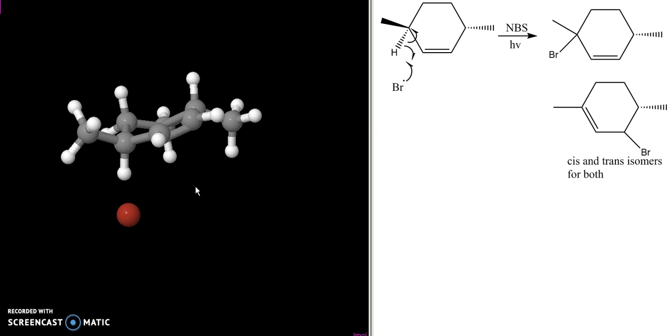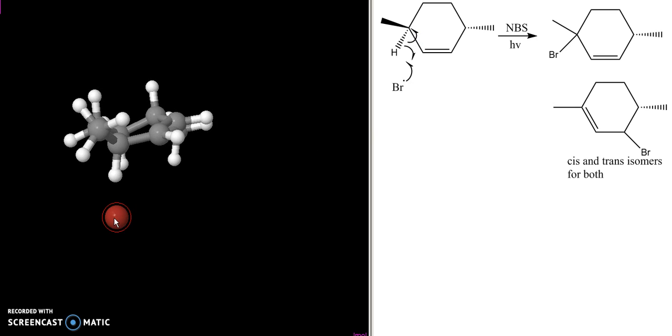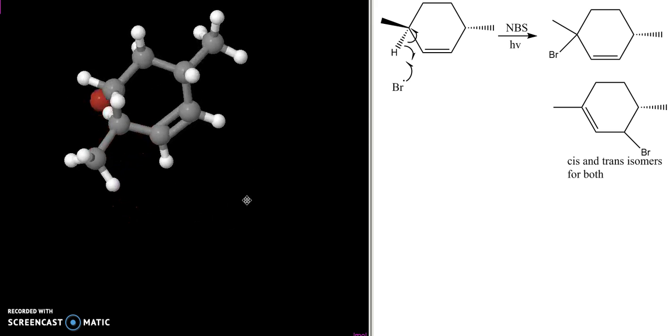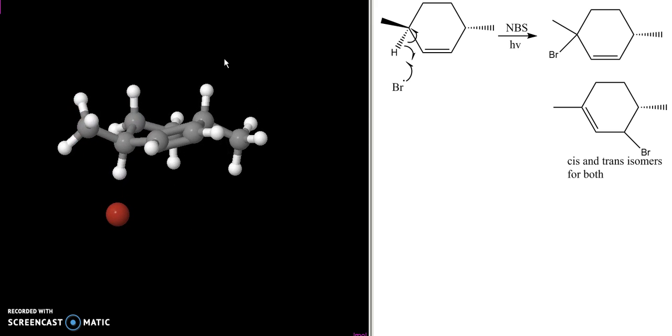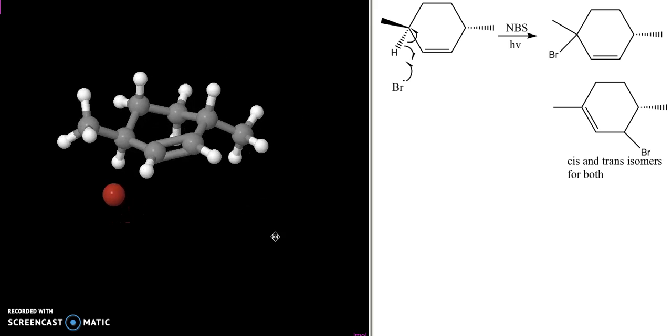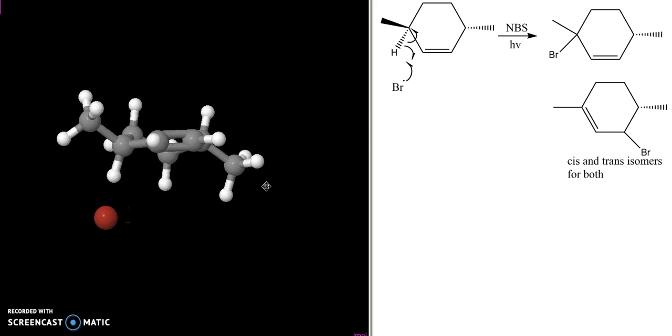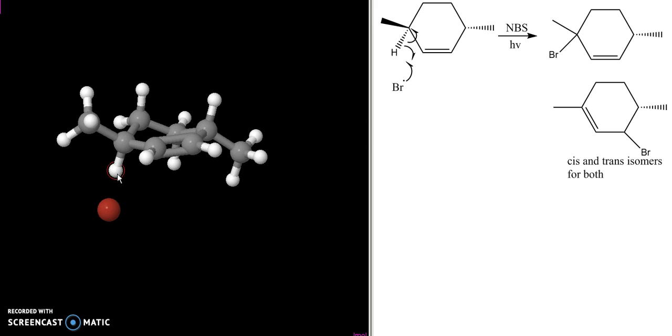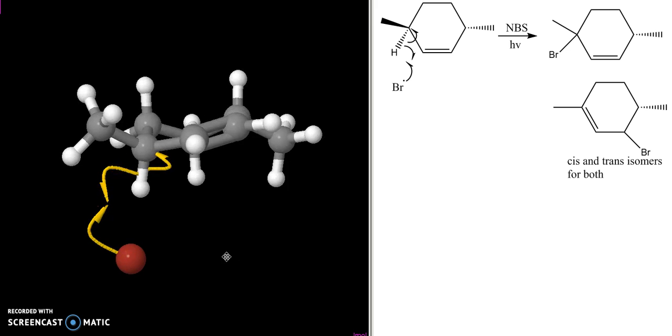We can look at this in three dimensions as well. So here's my bromine. Here is my cyclohexene starting reactant with my double bond, my two methyl groups. This is the hydrogen that's getting removed.